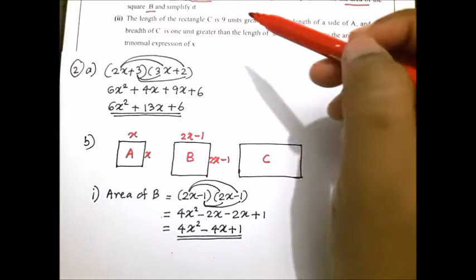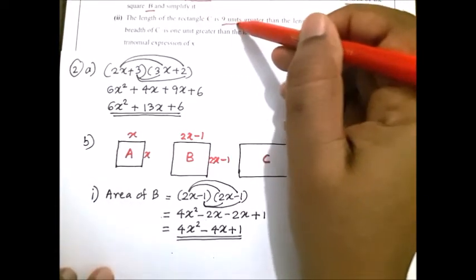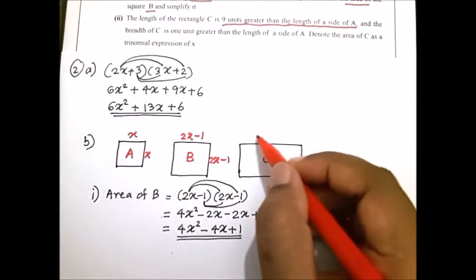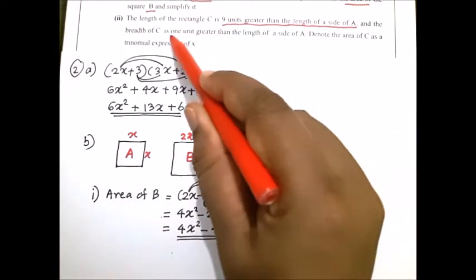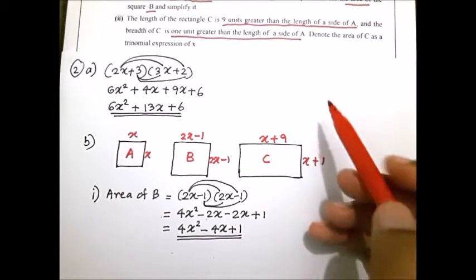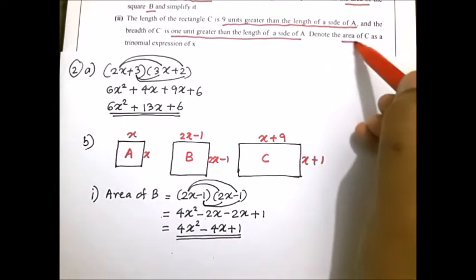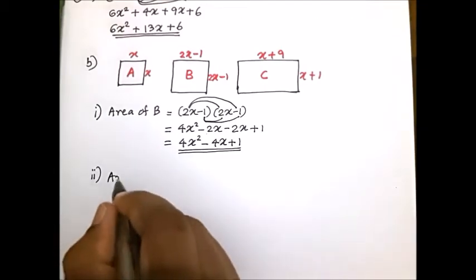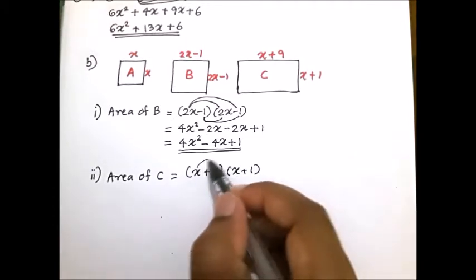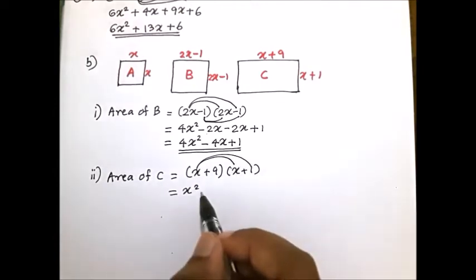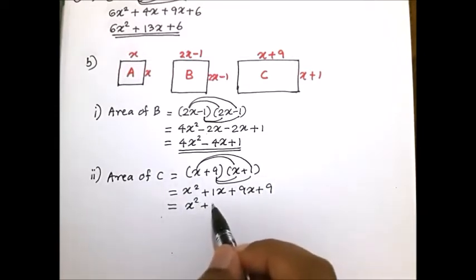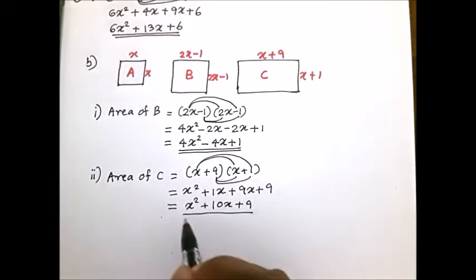Second part: the length of rectangle C is 9 units greater than the length of side of A, so length is x + 9. The breadth is 1 unit greater than the length of side of A, so breadth is x + 1. Find the area of C as a trinomial expression. Area of C equals length multiplied by breadth: (x + 9)(x + 1). Expanding: x² + x + 9x + 9, which simplifies to x² + 10x + 9. This is the area of rectangle C.